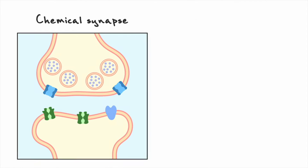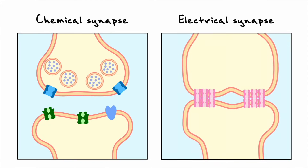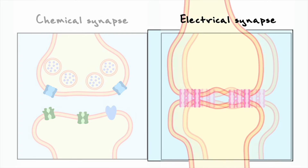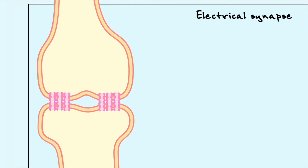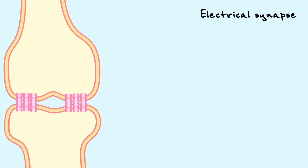There are two types of synapses found in the body: chemical and electrical synapses. All the synapses shown so far were chemical. Let's first go over electrical synapses to see how these two types differ from one another.